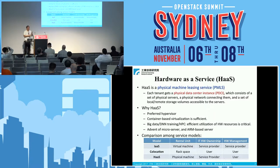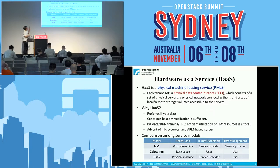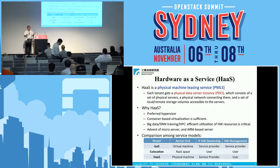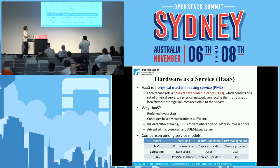Why do people want HaaS? Because they probably have their preferred hypervisor and don't want to use hypervisors that Amazon or Microsoft provide. Or they just want to do container-based virtualization and don't need hypervisor-based virtualization. Or they just want to use bare metal for big data analytics, DNN training, or high-performance computing — using servers not suitable for hypervisor virtualization, like microservers or ARM-based servers.